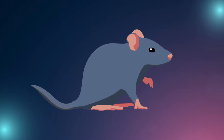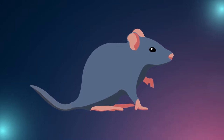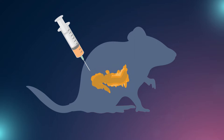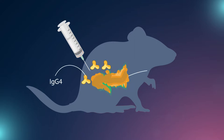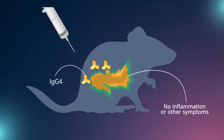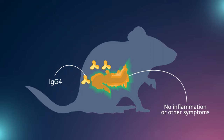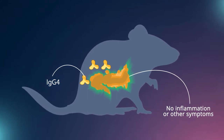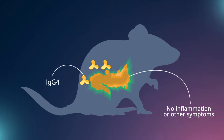For this, they selected recombinant mouse models that express ovalbumin in their pancreas. They first injected the mice with IgG4 specific to ovalbumin, and found that no inflammation or other IgG4RD-like symptom appeared, indicating that IgG4 alone was not the causative factor of IgG4RD.